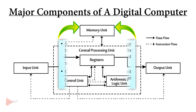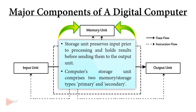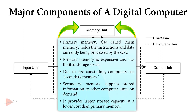Within a computer system, a storage unit is integrated to retain the input received from the input unit before the commencement of processing, as well as to hold the results generated by the computer prior to delivering them to the output unit. The computer's storage unit consists of two kinds of memory: primary and secondary. The primary memory, also known as main memory, is the part of a computer that holds the instructions and data currently being processed by the CPU, the intermediate results produced during calculation, and the recently processed data. With instructions and data residing in the main memory, the CPU can directly and swiftly access them.